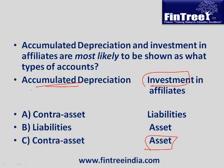Accumulated depreciation: you have a fixed asset on your asset side, and you would reduce it by the accumulated depreciation. Every time you reduce one item and show expense somewhere else, that is called a contra asset. So we say total assets minus accumulated depreciation equals net assets, and therefore we call this a contra account.